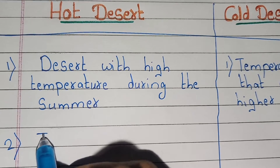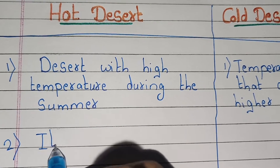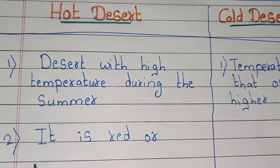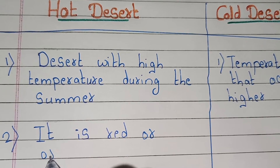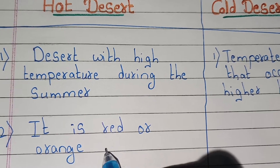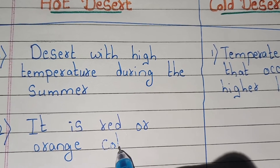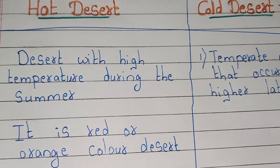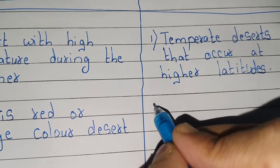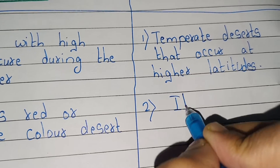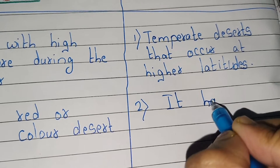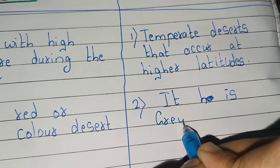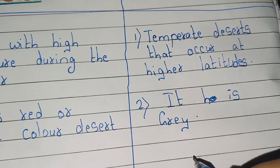Second point: in hot desert, it is red or orange in color. In cold deserts, it is gray.